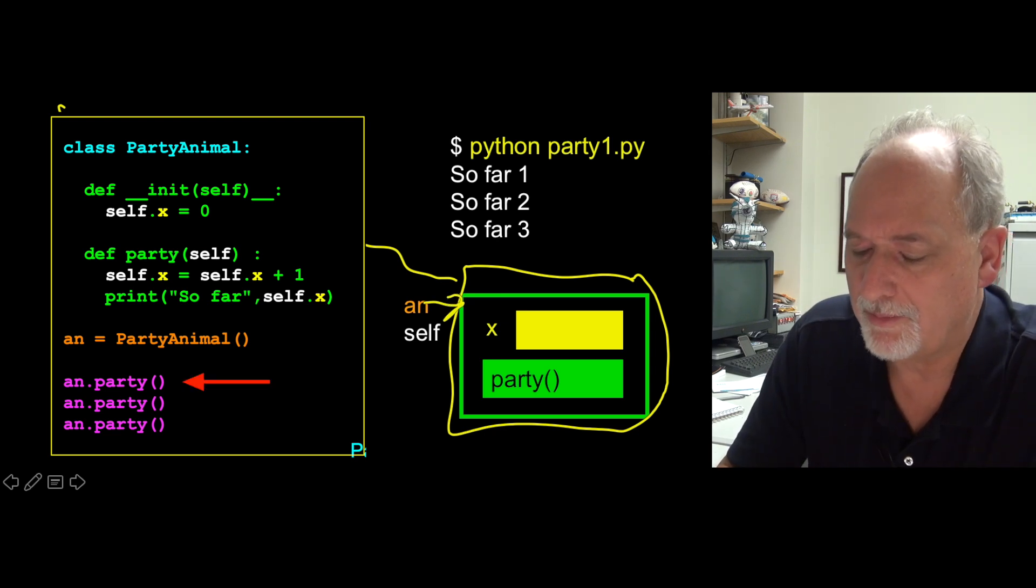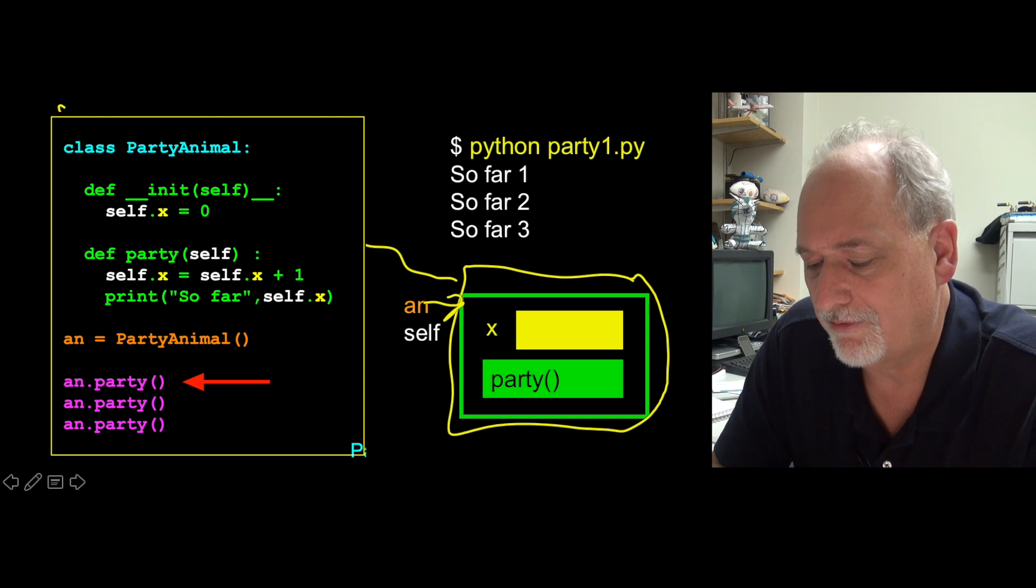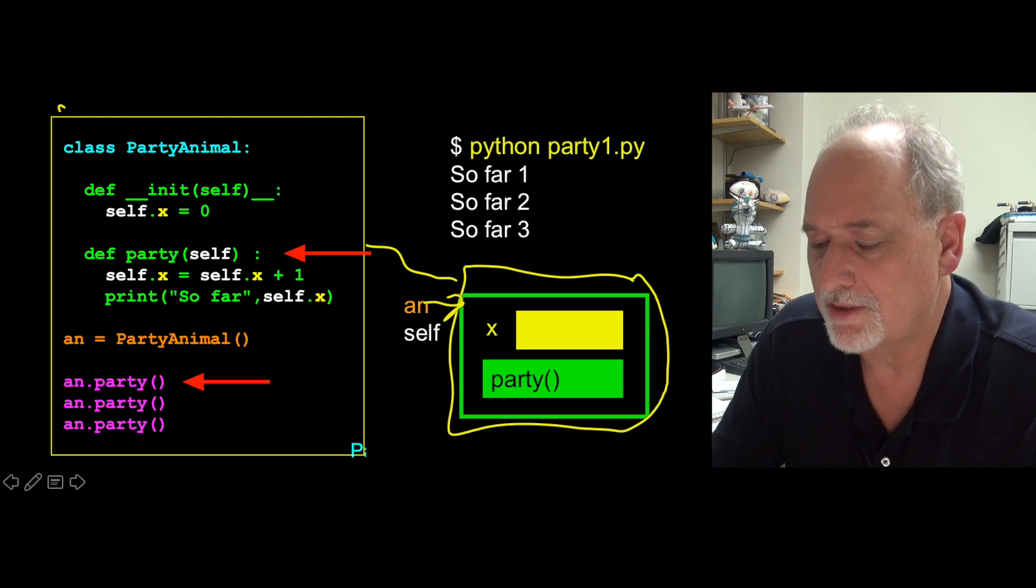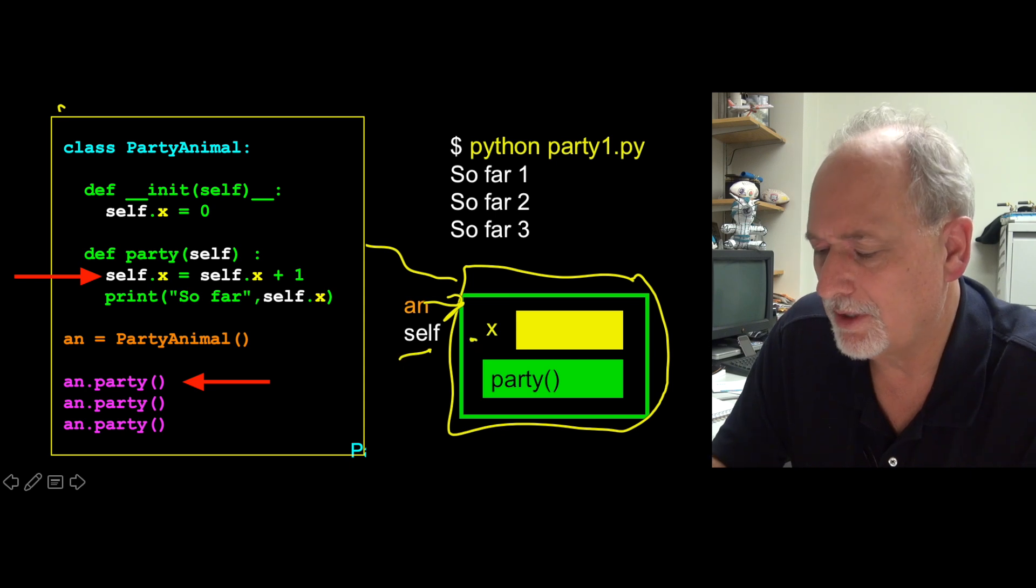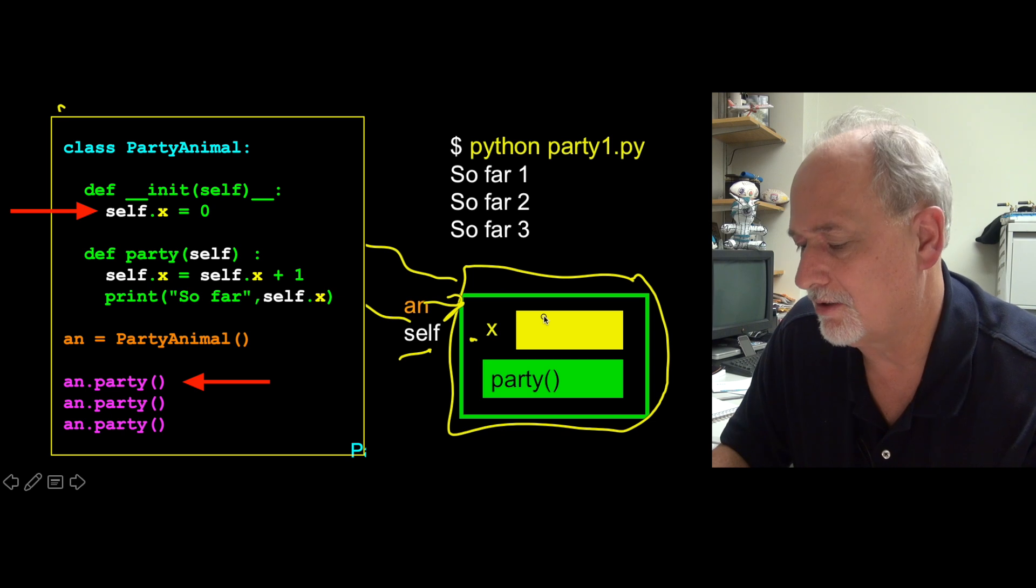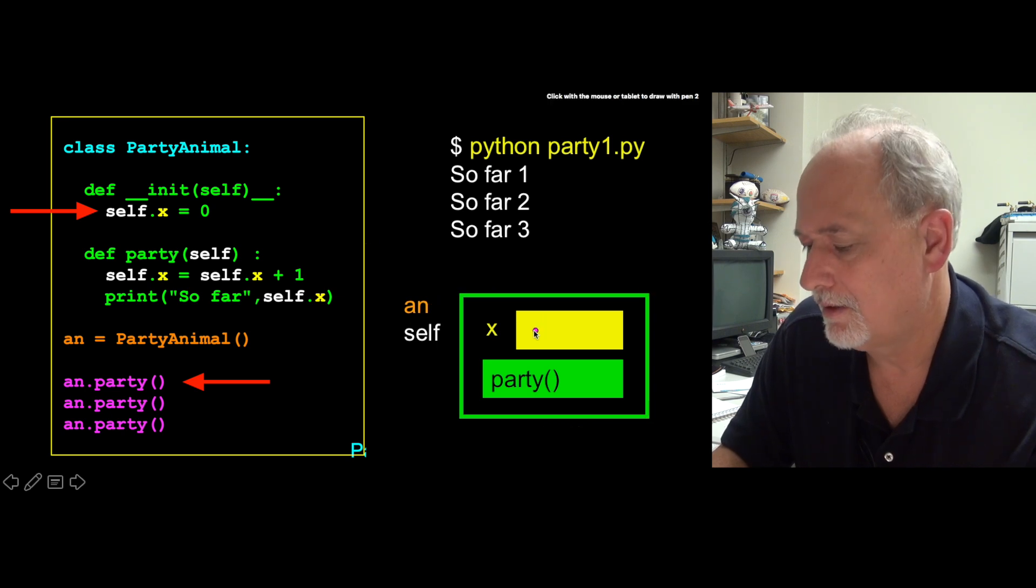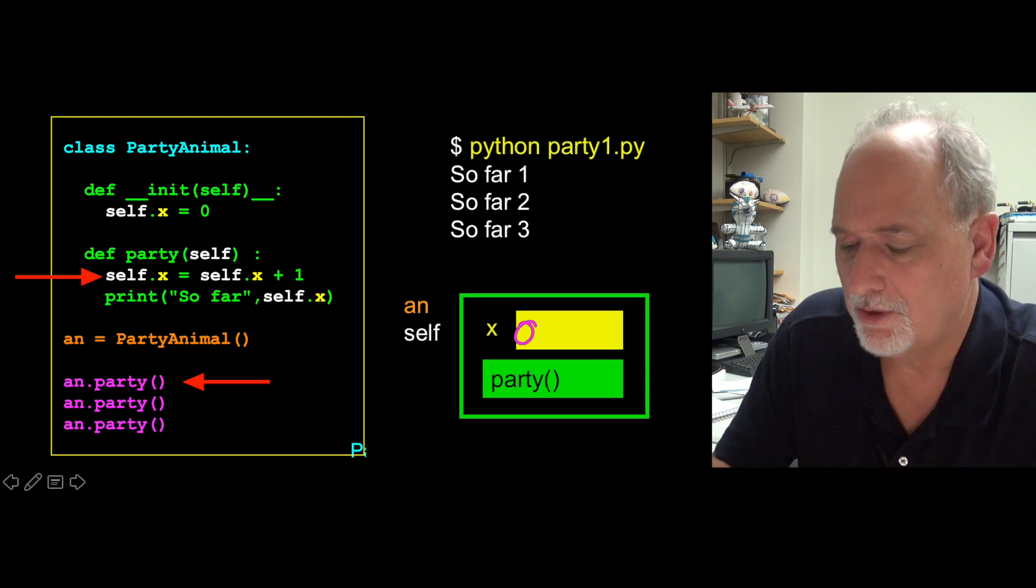Then when we call the party method, that basically takes this an and passes it in as the first parameter, which is used as self. And so self.x, which is what we're doing in this line right here. Self.x is a variable. X starts out as zero. X starts out as zero because when it was constructed it was set to zero. So we're in here. An is an alias of self.